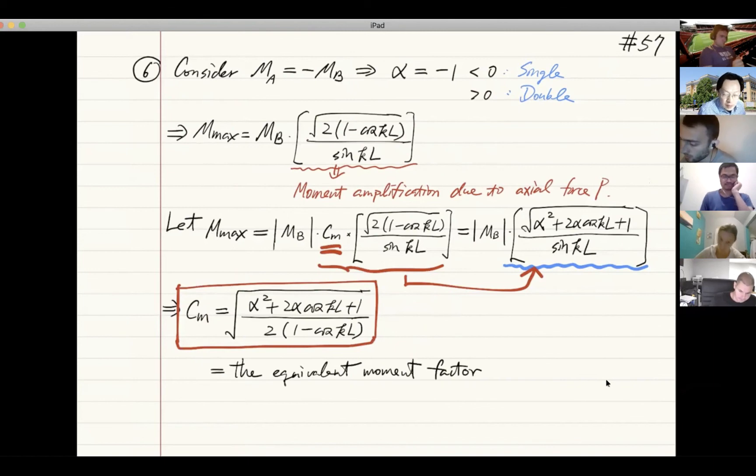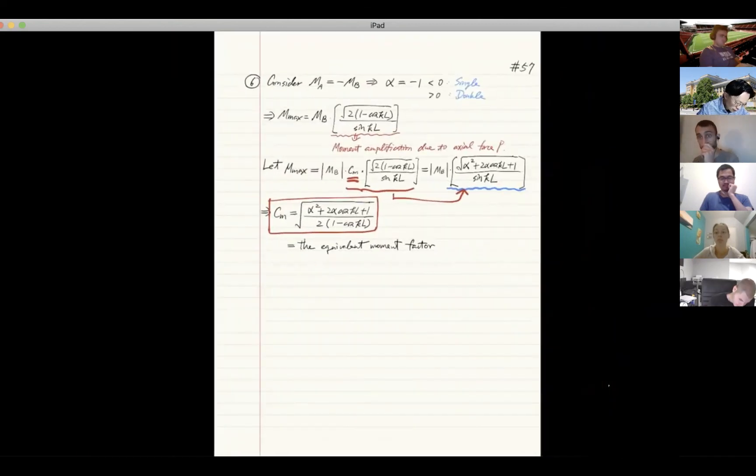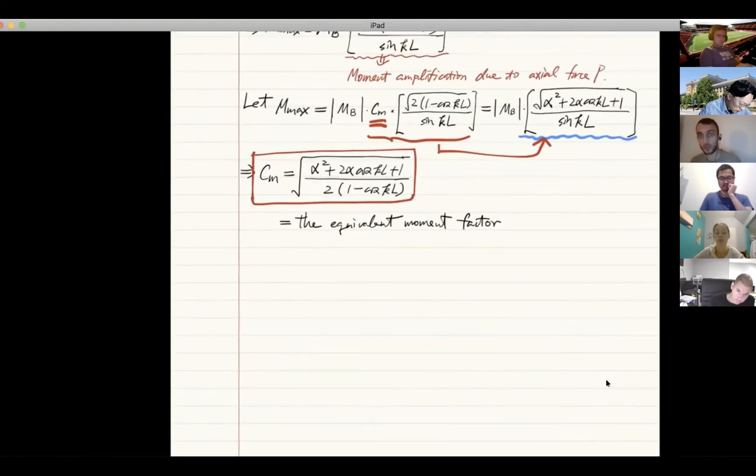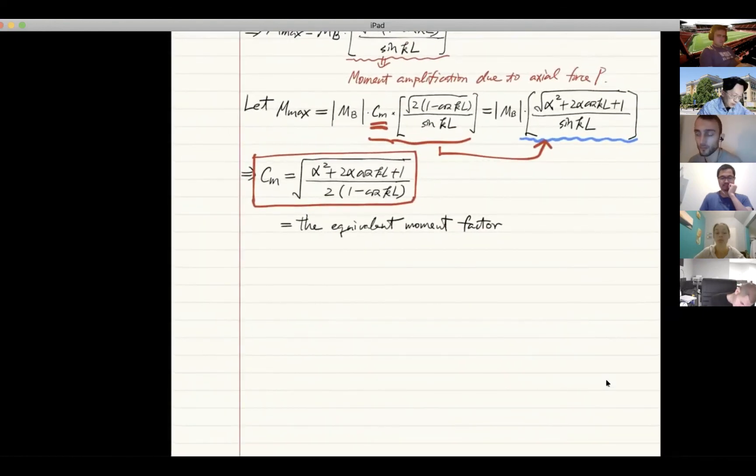This is one commonly used design parameter—what we call the equivalent moment factor. On the steel design manuals, you are provided with the values of CM, usually just some empirical values, never really the theoretical expression, but this is the theoretical expression. There's a section dedicated to the different values of CM, because when it comes to design, you won't be able to really plug in all this sine cosine—you'll just be provided with some values. First of all, let's understand the physical meaning of this better.